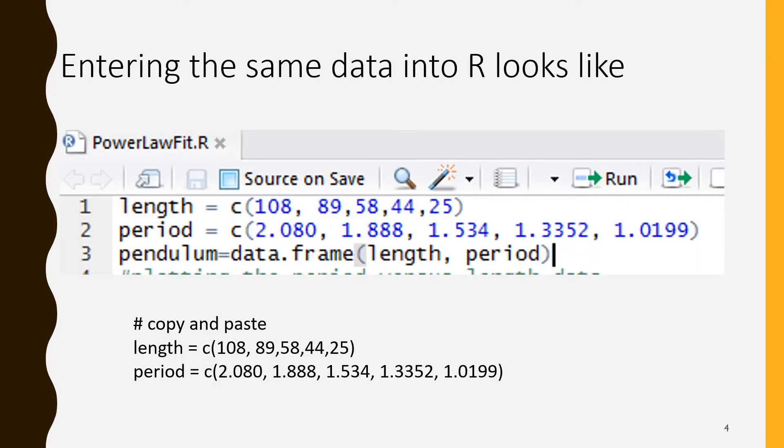Here we are taking that same data and bringing it over into R. The first line length equals C open parenthesis and then we have five numbers. We are creating a length vector and we use the C function in R, the concatenate function, and it creates a vector. In line one we create a length vector with five values.